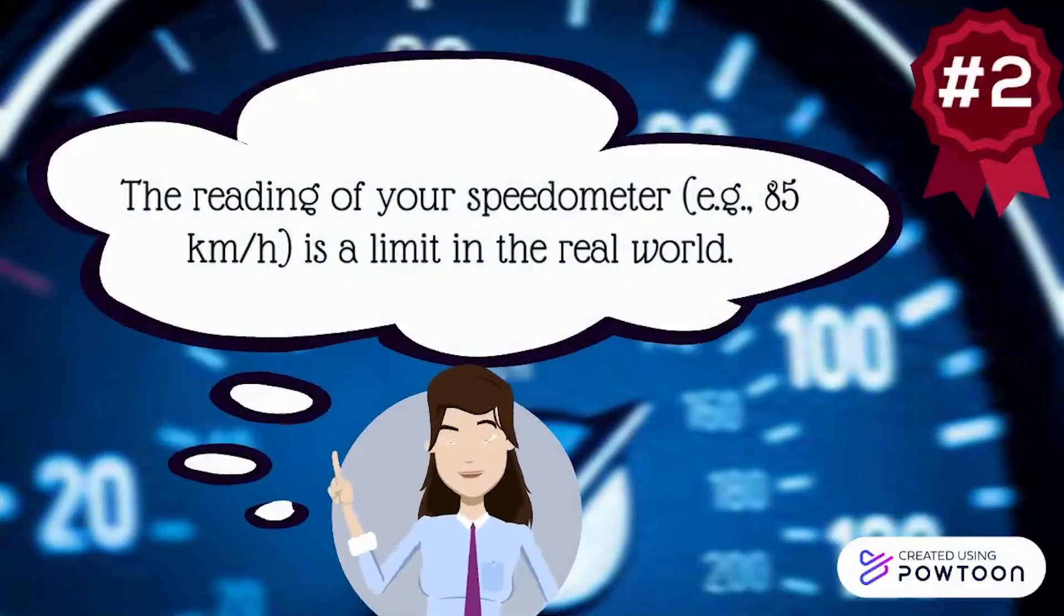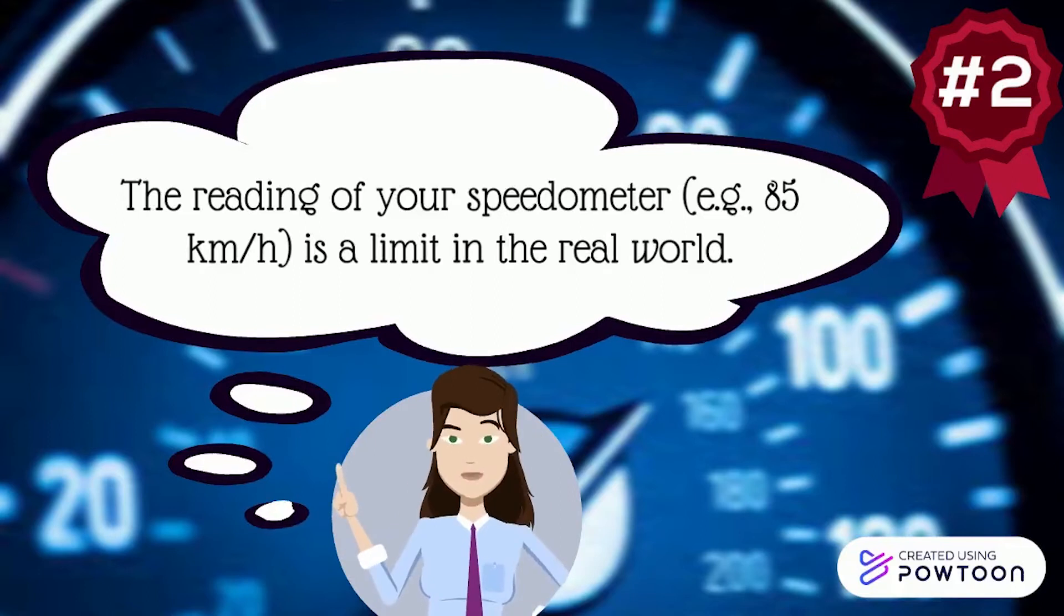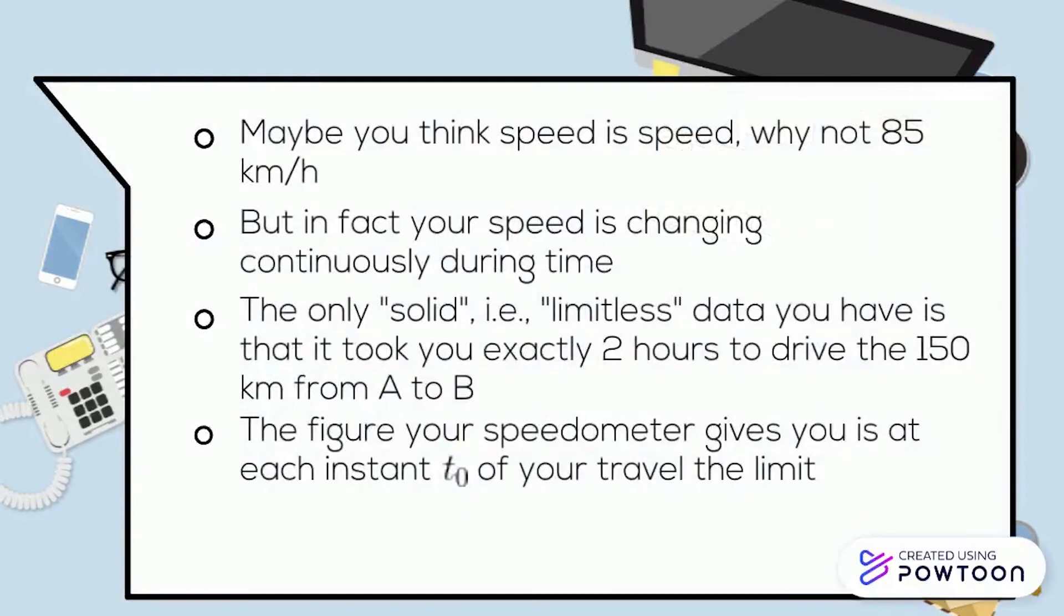The next example after toss a coin is speedometer. When the reading of your speedometer, for example 85 kilometers per hour, is a limit. In the real world, maybe you think speed is speed, then why not 85 kilometers per hour? But in fact speed is changing continuously during the time and the only solid, or in other words limitless, data you have is that it took you exactly two hours to drive the 150 kilometers from A to B. The figure your speedometer gives you is at each instant t0 of your travel a limit.